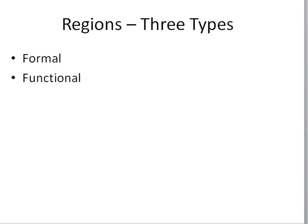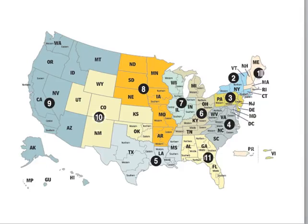Functional regions are regions developed to provide some kind of function. You could look at a country like the United States as a functional region. Their borders are hard and fast — we fight over our borders. You can either be in the U.S. or not, and that's clear down to a matter of millimeters on the ground. There's a node where decisions are made; that would be Washington, D.C.